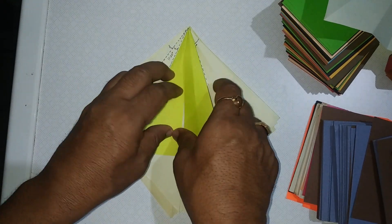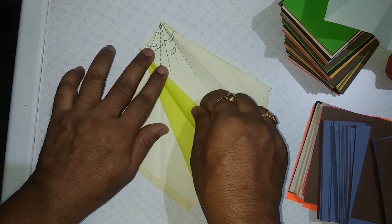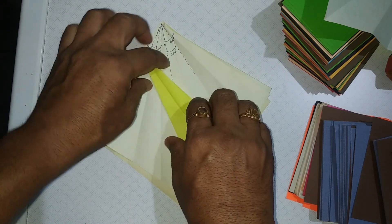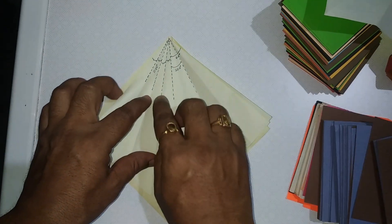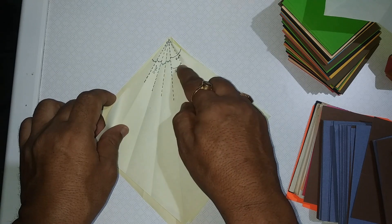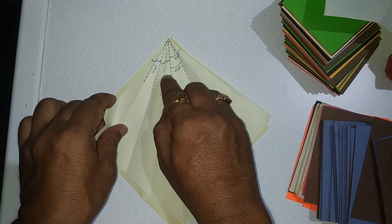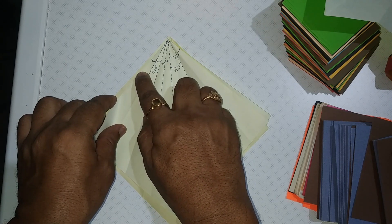And these 22.5 degree angles were bisected again in this way on both the sides. So these 22.5 degrees are bisected and we got 11.25 degrees.